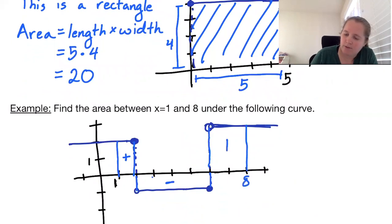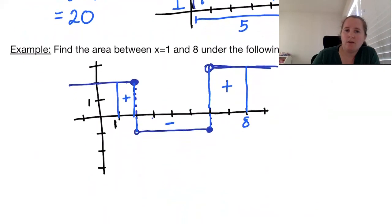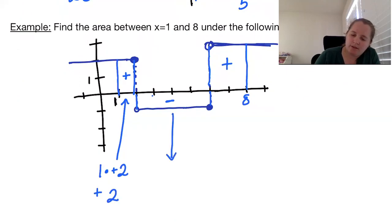If it's above the axis it's positive area. So this first rectangle is width 1 times positive 2 for height, so it has area positive 2. This one here we have width 4 times height of negative 1, so we have an area of negative 4.